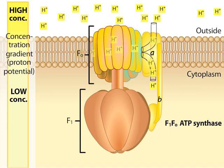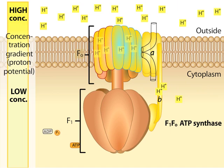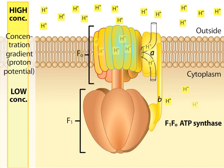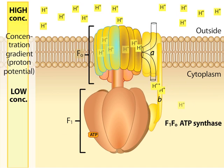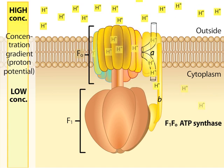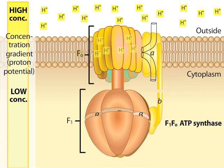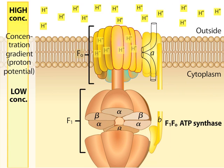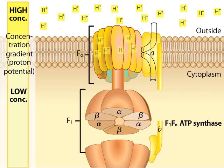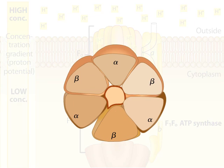Note that as F0 rotates, the axle also rotates, but F1 does not. F1 is held in place by its connection to the membrane through the A and B subunits.